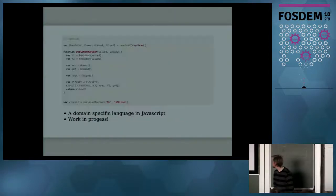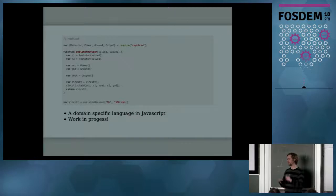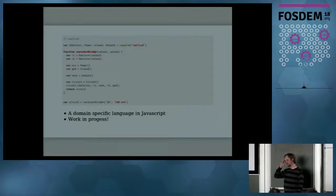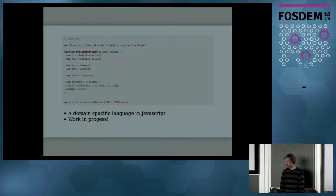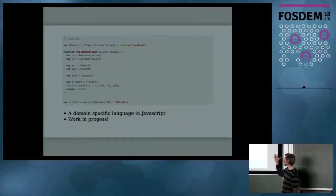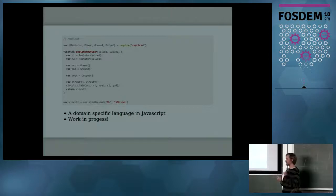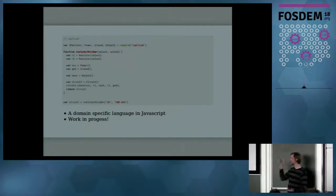There's an explicit circuit object in Replicad. With both Skidl and PyCircuit there's an implicit circuit object being modified; here you instantiate a circuit explicitly and add connections to it, which also implicitly adds the components. Functions in Replicad parameterize over the values in your circuit rather than over connections — so for a resistor divider, you can instantiate it with different resistor values, return your circuit, and reuse it in another circuit.